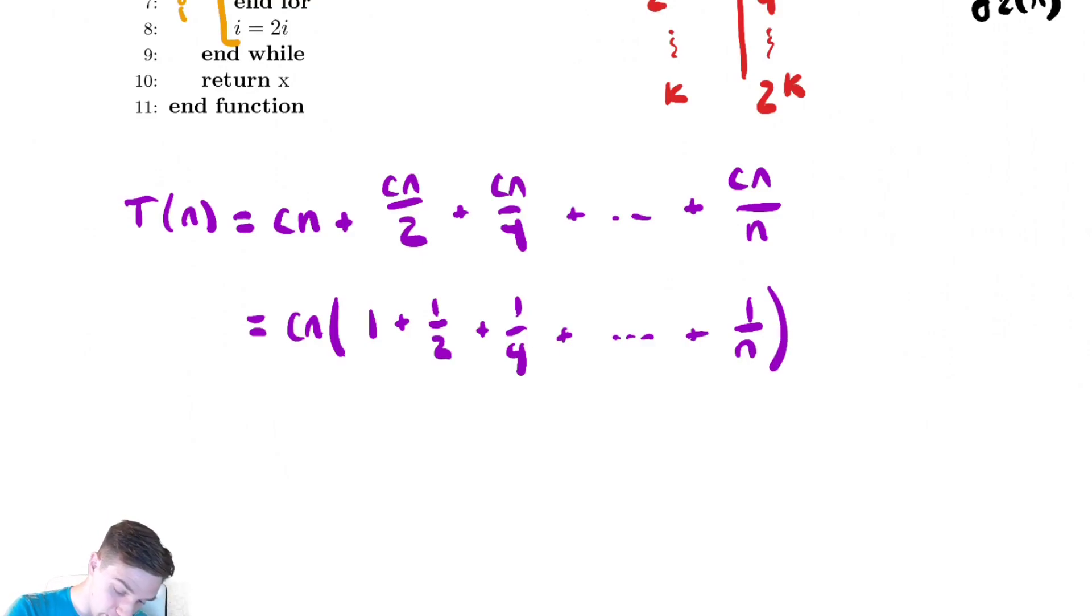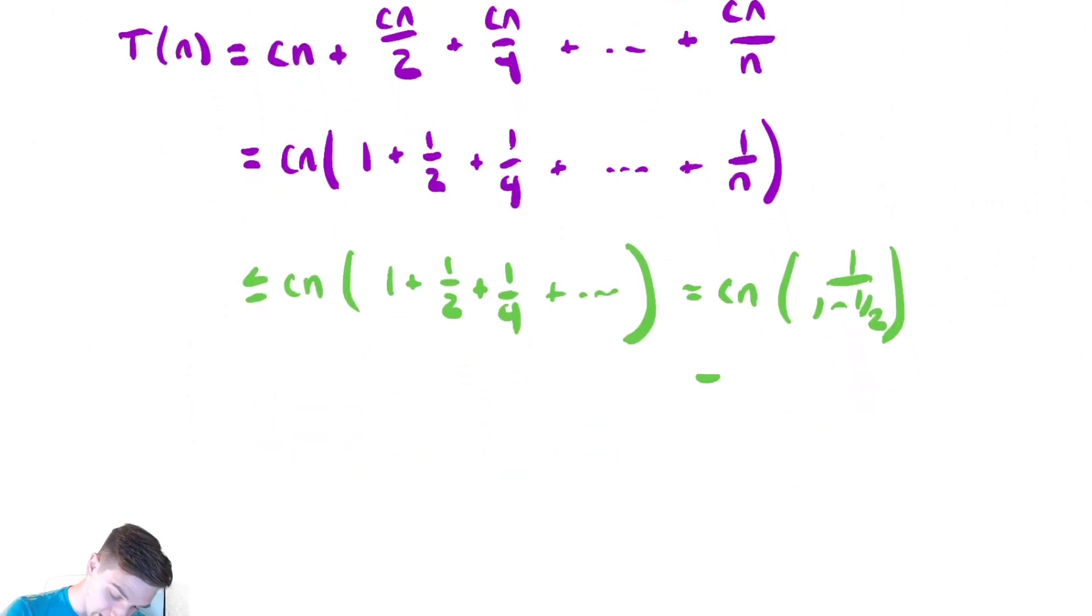Let's bound this above. To bound it above, we're going to bound it above by an infinite geometric series, because it is a finite geometric series. That converges to 1 over 1 minus the common ratio. That simplifies to 1 over 1 minus 1 half. That's just 2, so it's 2 cn.